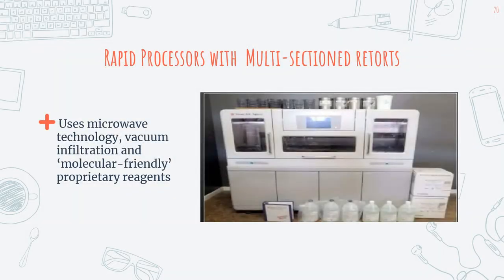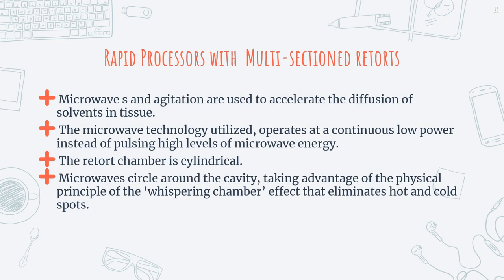For rapid processors with multi-section retorts, microwave technology, vacuum infiltration, and molecular-friendly proprietary agents are used. Microwaves and agitation are used to accelerate the diffusion of solvents in tissue. The microwave technology operates at a continuous low power instead of pulsing high levels of microwave energy. The retort chamber is cylindrical and the microwave circles around the cavity, taking advantage of the physical principle of the whispering chamber effect that eliminates hot and cold spots.